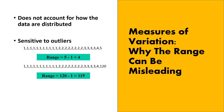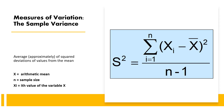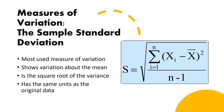Next is sample variance. It is the average of the squared deviations of values from the mean. You subtract the mean from each value, square the result, and divide by n minus 1, where n is the sample size. The symbol for sample variance is s².